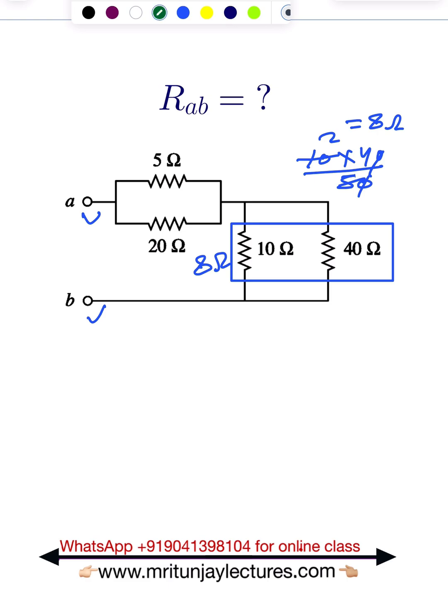What about that combination? Simply 20 into 5 divided by 25, which is the sum of these two. So 5, 5 cancel, and basically we get 4 ohm.